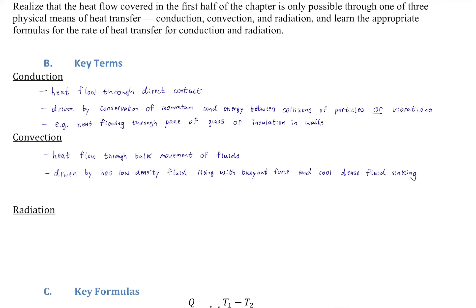Convection is driven by hot, low-density fluid rising with a buoyant force — almost like a balloon without a membrane, held together by limited mixing at the surface. Cool, dense pockets of fluid sink because the buoyant force is less than gravity. These rising and sinking pockets form convection cells — large circular structures of fluid movement.